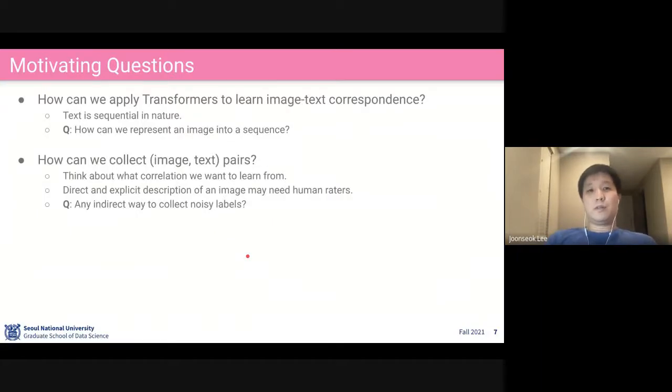Here are the motivating questions. How can we apply the transformer to learn image text correspondence? Let's recall that transformers take a sequence, right? A sequence of tokens. But text is a sequence in nature. What about an image? Image is not a sequence.